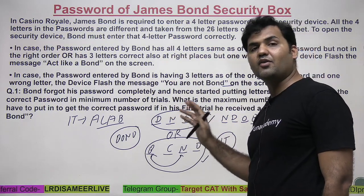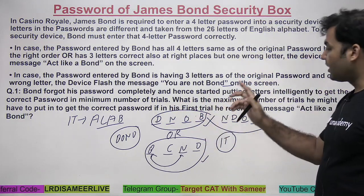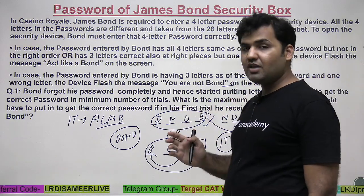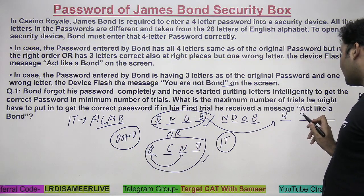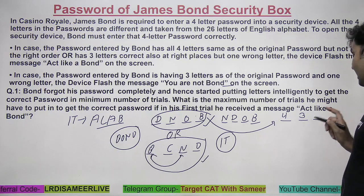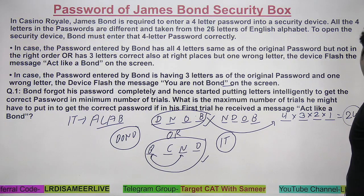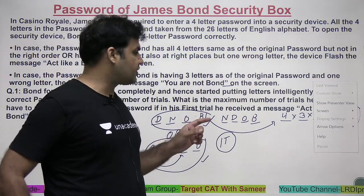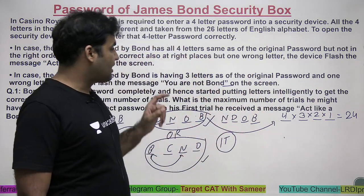Let's say after one trial he figures out that all four letters are correct but not in the right order. To reach the correct password, how many arrangements of the letters in the word BOND are possible? The first position can be filled in 4 ways, the second in 3, the third in 2, and the fourth in 1 — giving 4 × 3 × 2 × 1 = 24 arrangements. One of those 24 is definitely the correct password.